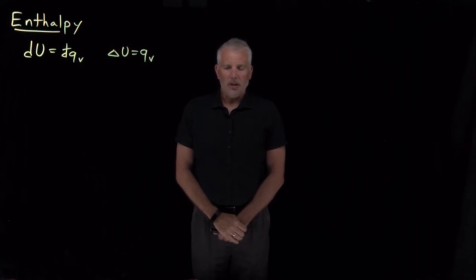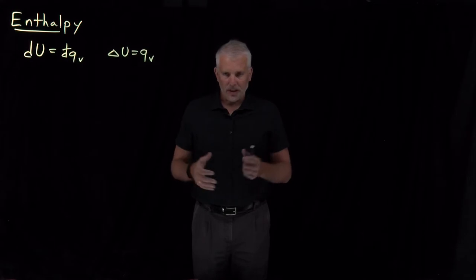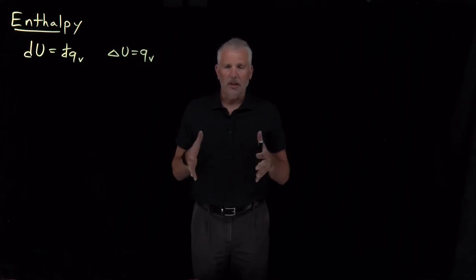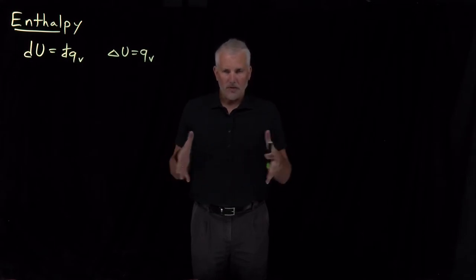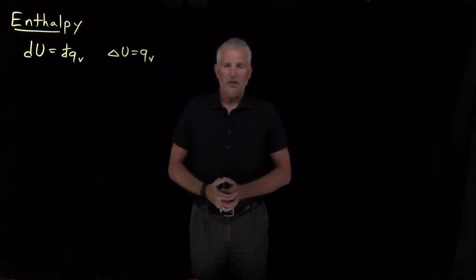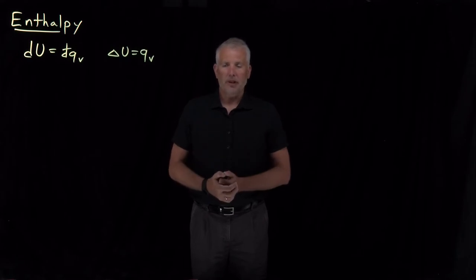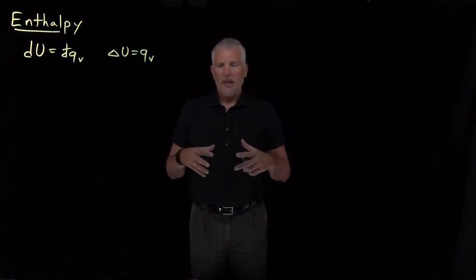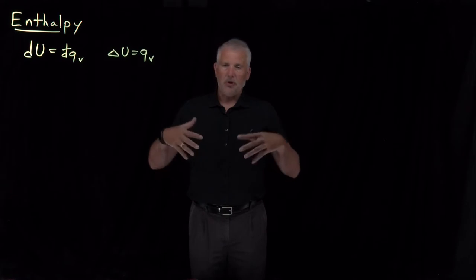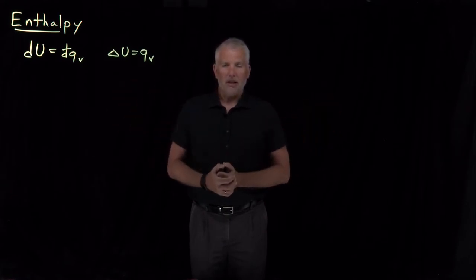If you want to do an experiment at constant volume, you've got to be very careful: have a rigid container, make sure it's fully sealed, make sure that it's sturdy enough that the volume can't change. So it's a lot more difficult to do an experiment at constant volume than at constant pressure. On the other hand, this room is at one atmosphere of pressure, roughly. If I did a reaction in this room, if something expands, it just pushes some of the air out of the room and keeps the whole environment at one atmosphere of pressure.